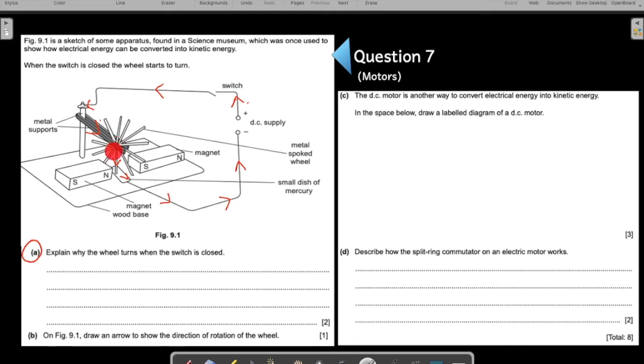So why is the loop turning? Look carefully. You have two magnets and in between the magnet you have a current carrying conductor.